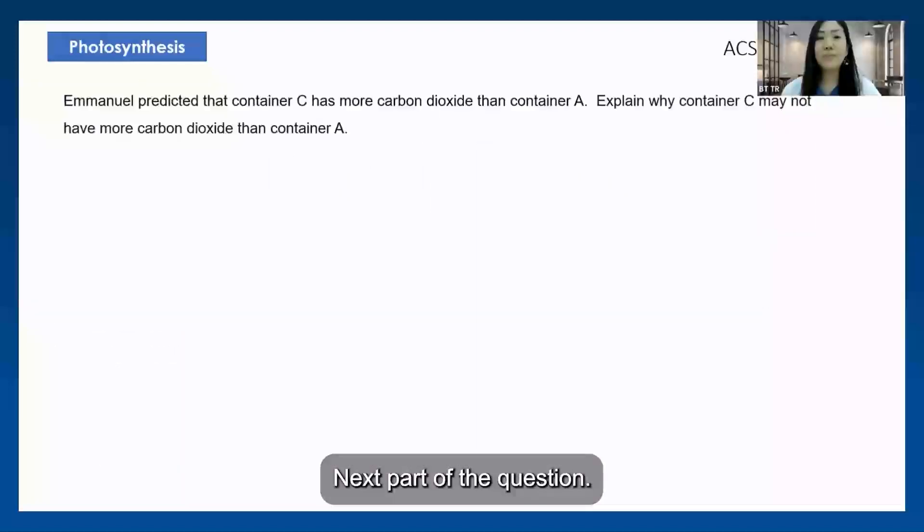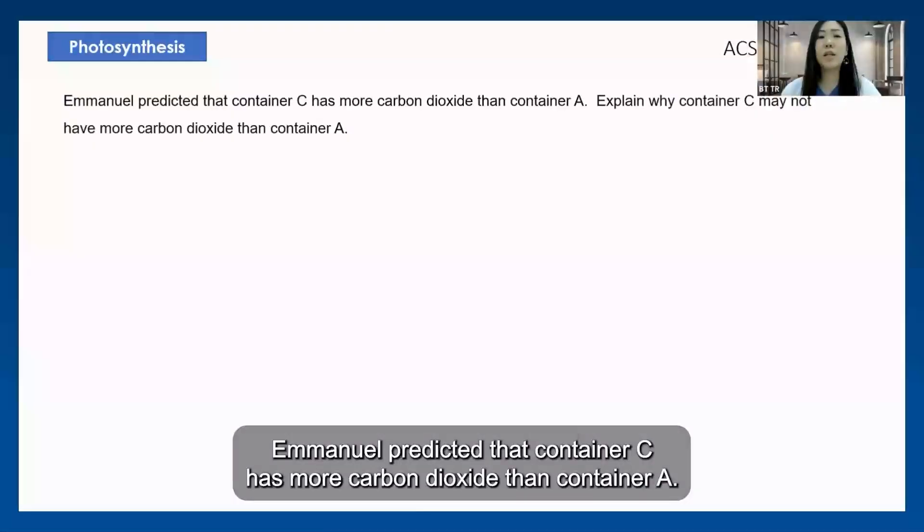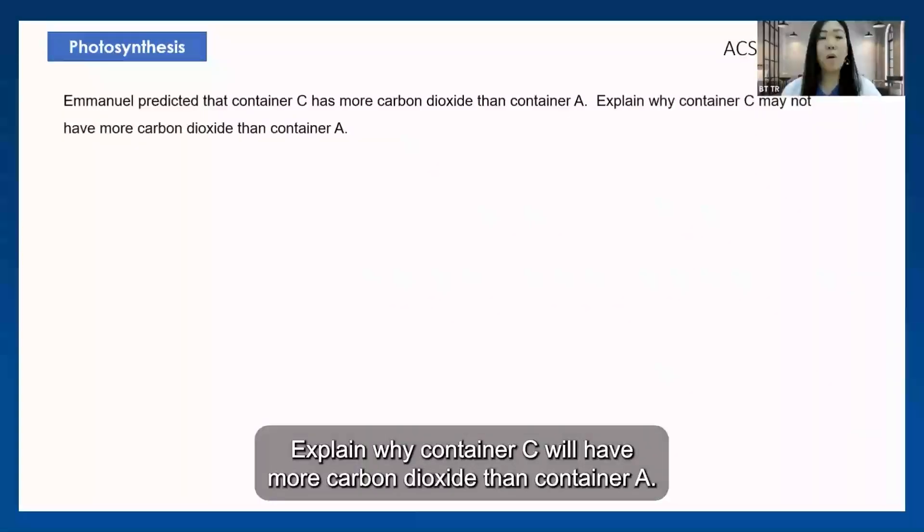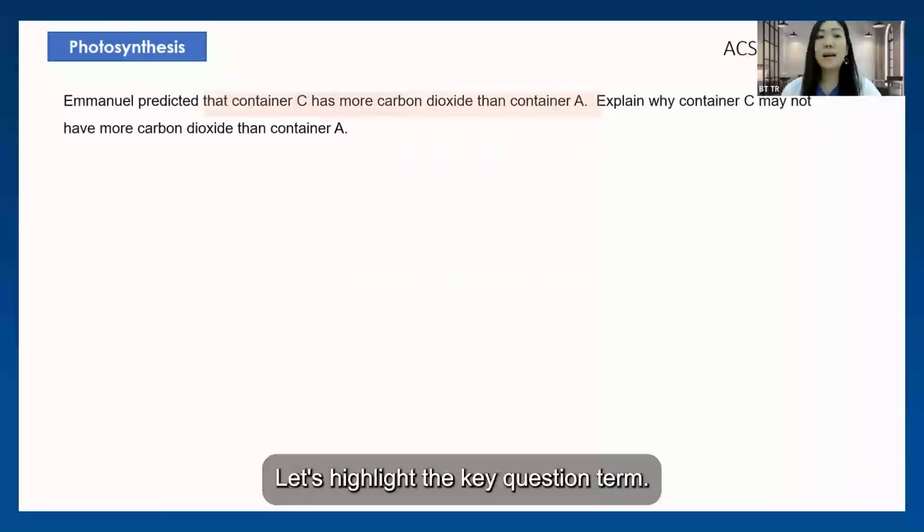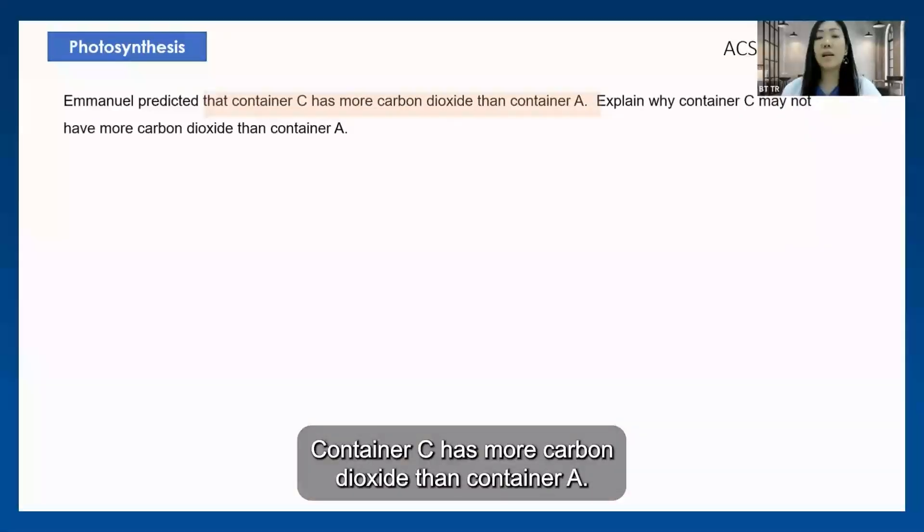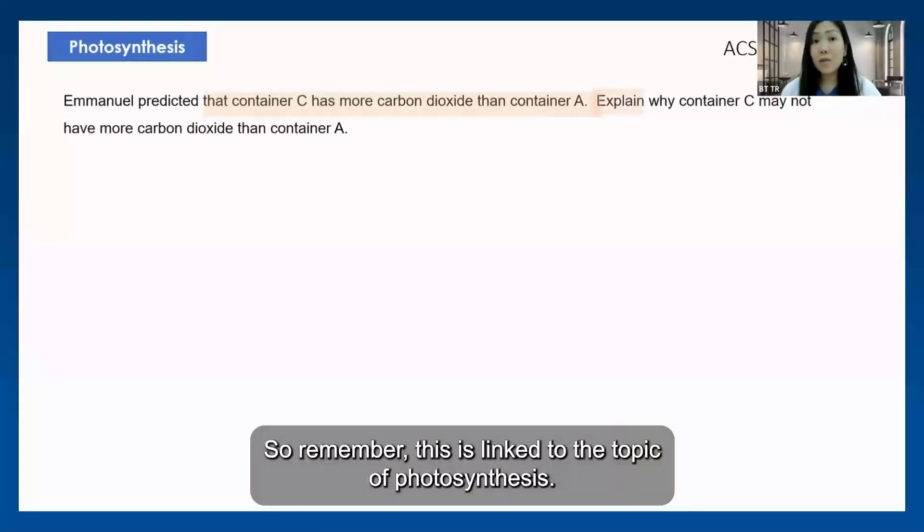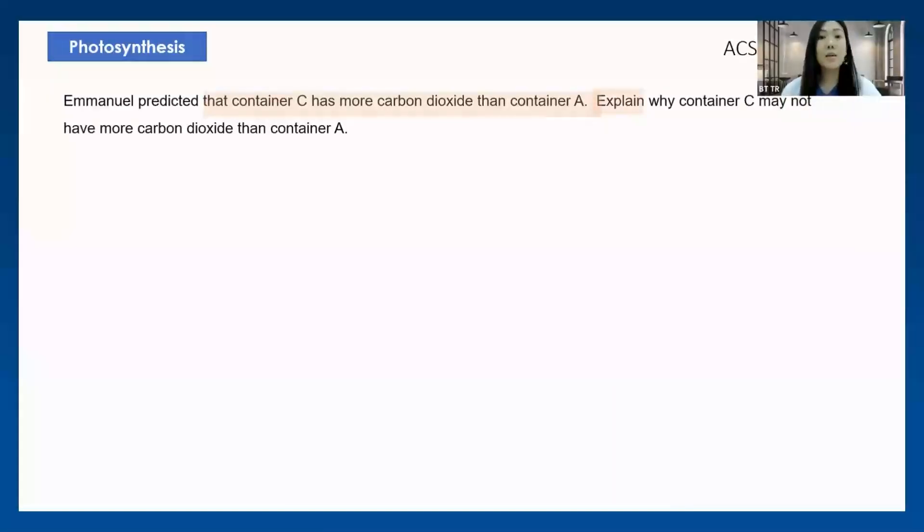Next part of the question: Emmanuel predicted that container C has more carbon dioxide than container A. Explain why container C will have more carbon dioxide than container A. Same thing - let's highlight the key question term: container C has more carbon dioxide than container A. Remember, this is linked to the topic of photosynthesis, so this is definitely about taking in carbon dioxide for the process of photosynthesis.